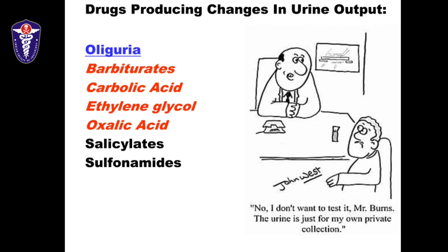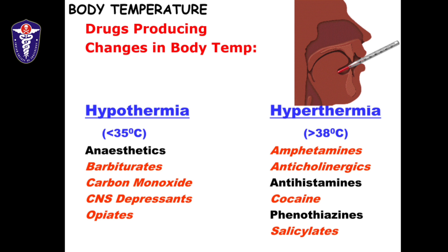The urine output also helps assess cardiovascular status. If there is decreased urine output or oliguria, common drugs to keep in mind are barbiturates, carbolic acids, ethylene glycol, oxalic acid, salicylates, and sulfonamides. Regarding body temperature: drugs causing hypothermia include CNS depressants, opiates, carbon monoxide, barbiturates, and anesthetic agents. Hyperthermia can be caused by cocaine, salicylate, phenothiazines, amphetamines, and anticholinergics.